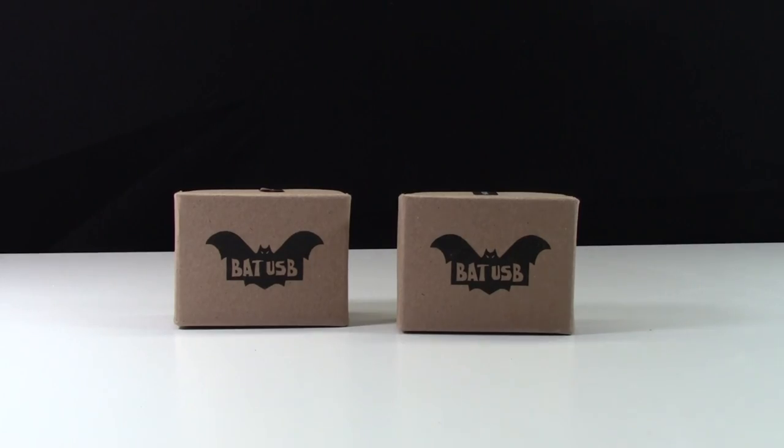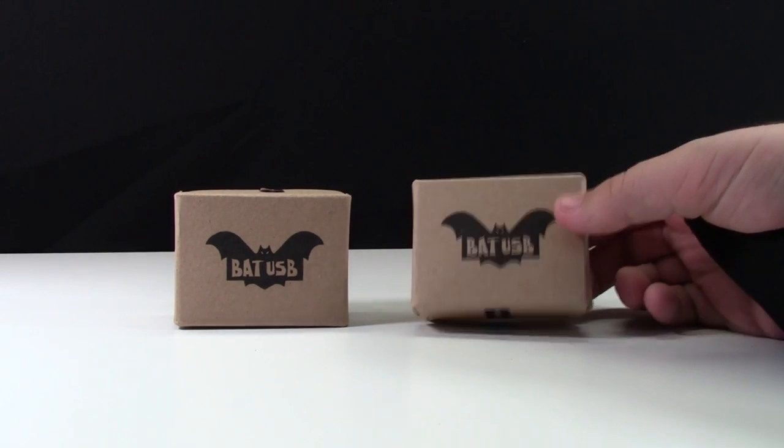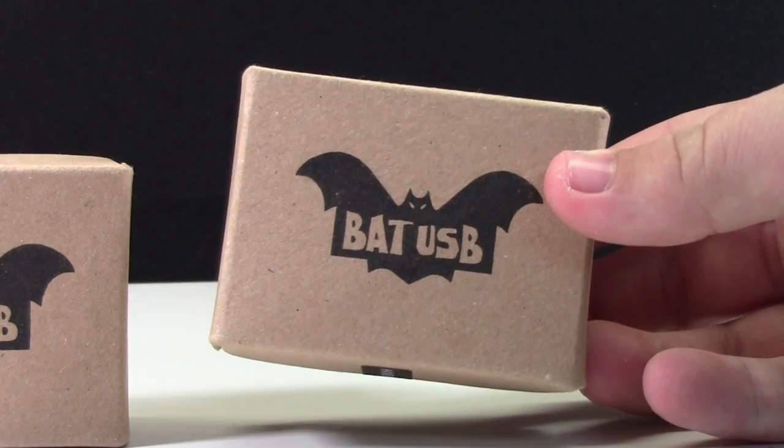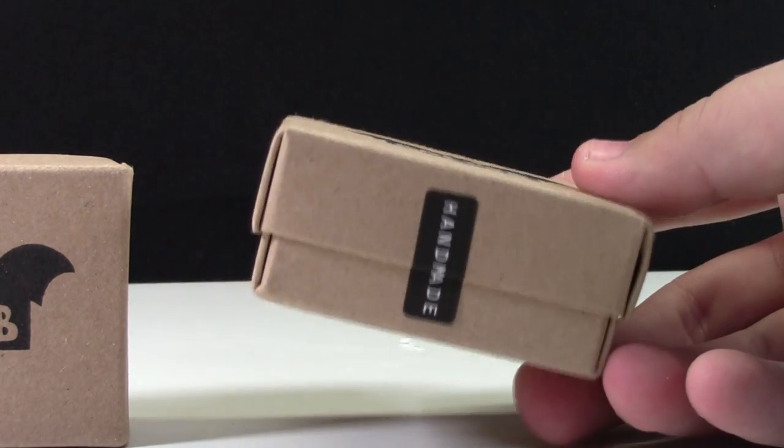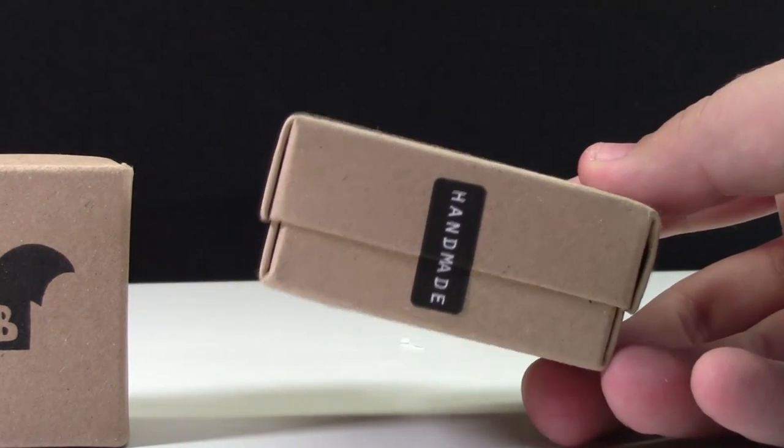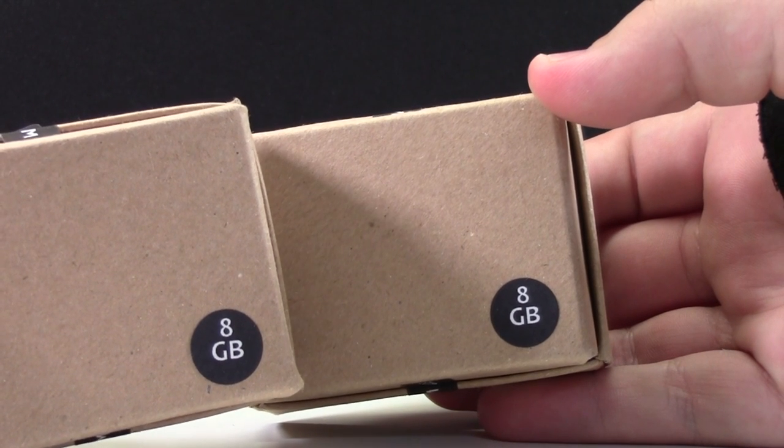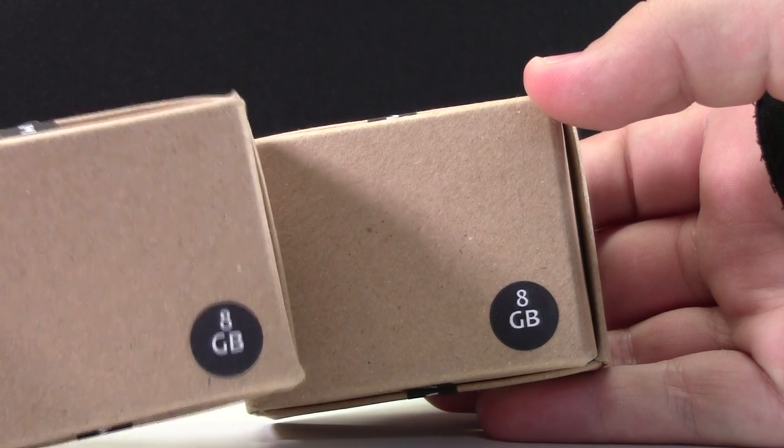Here are the two USB boxes and I'm very impressed with how well they are packed. You can see that they have the BatUSB logo stamped on the front of the box and on each side of the box they have these little handmade stickers. On the bottom of each box it tells you how many gigabytes are on each USB drive.